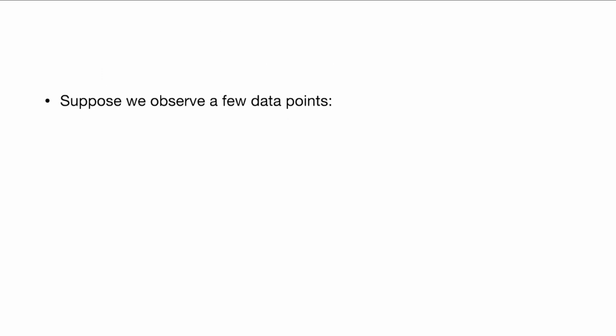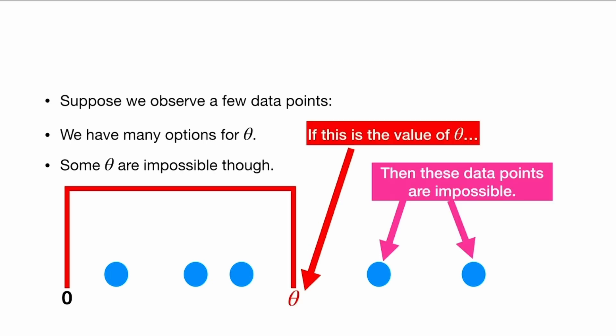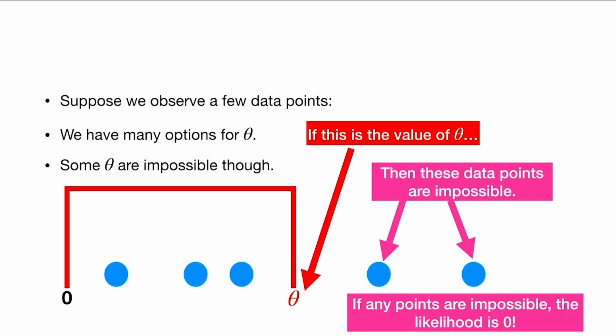Let's suppose we observe a few data points. All these points are above zero. We have many options for θ but some thetas are impossible. If this was our value of θ, then these data points here are impossible. They are not between 0 and θ. So if any points are impossible, the likelihood is zero.